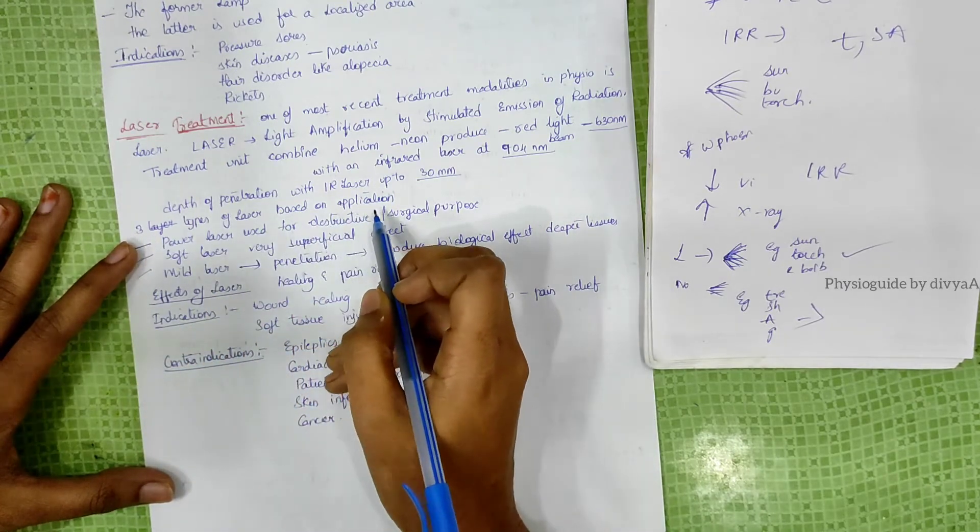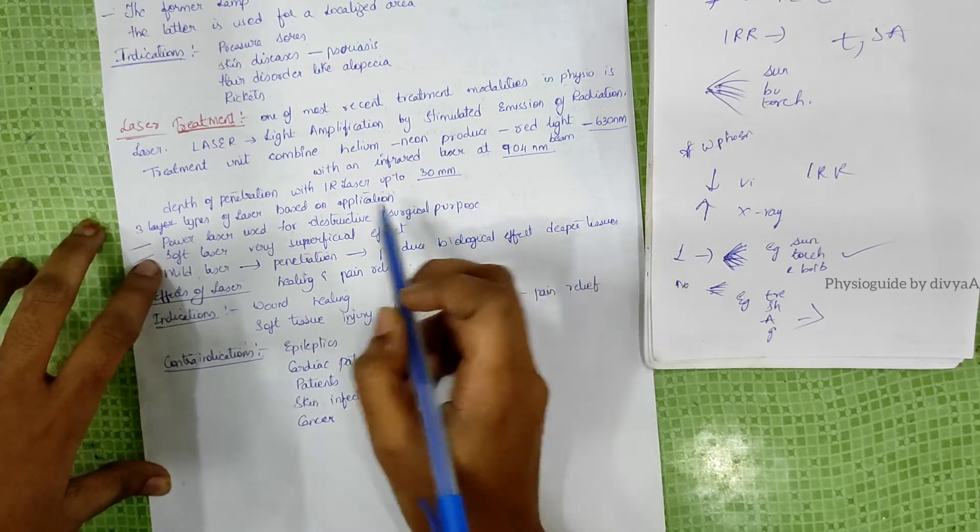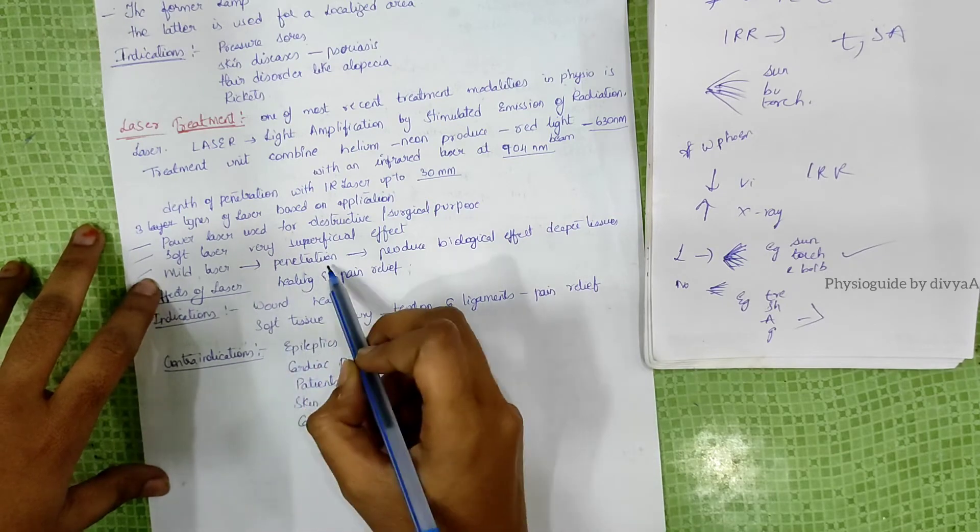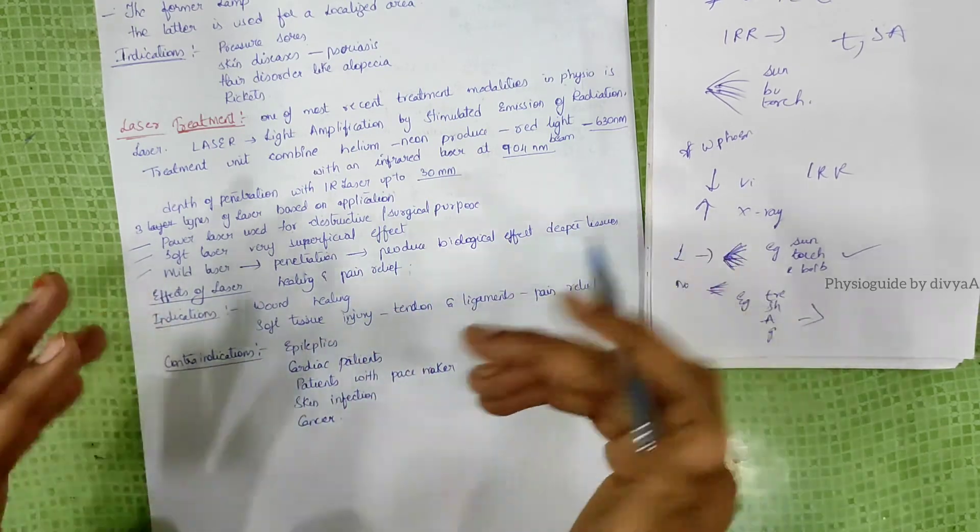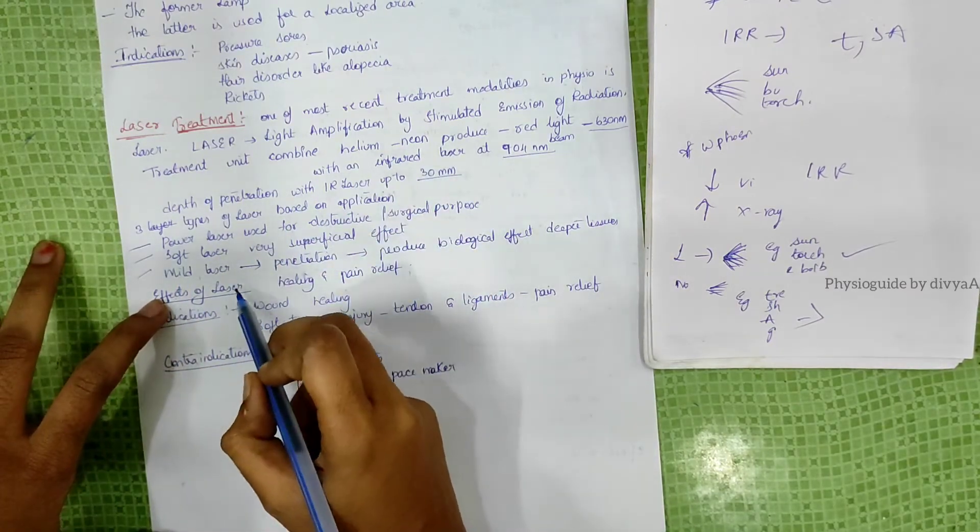Three types of laser beams: high-power laser used for destructive surgical purposes, soft laser for very superficial effects, and mild laser for penetration to produce biological effects on deeper tissues. The effects of applying laser are healing and pain relief.